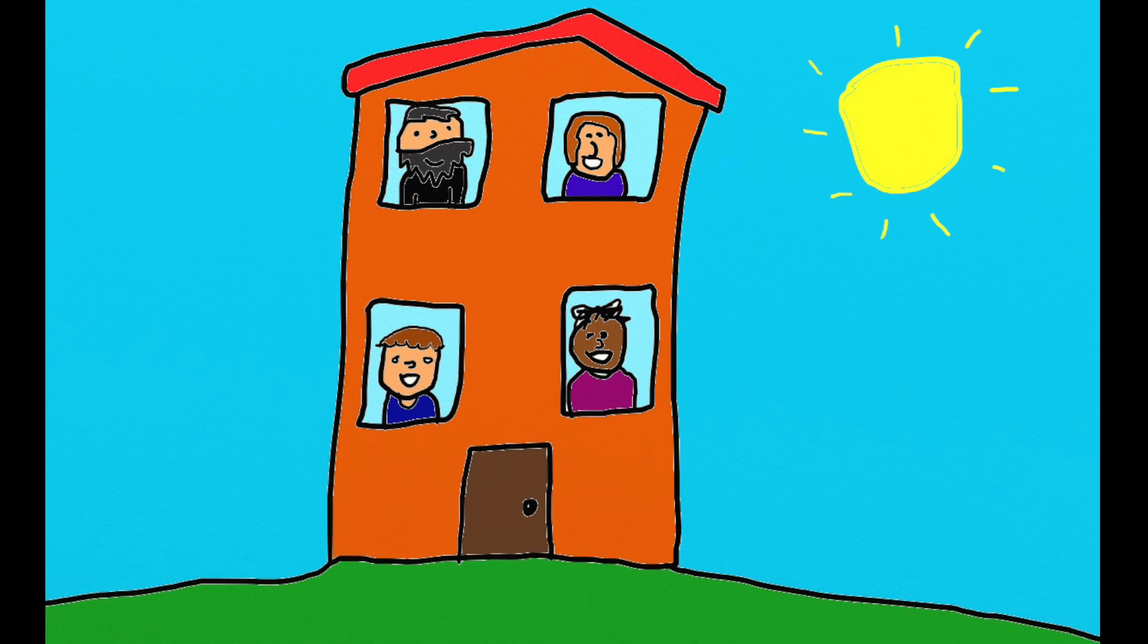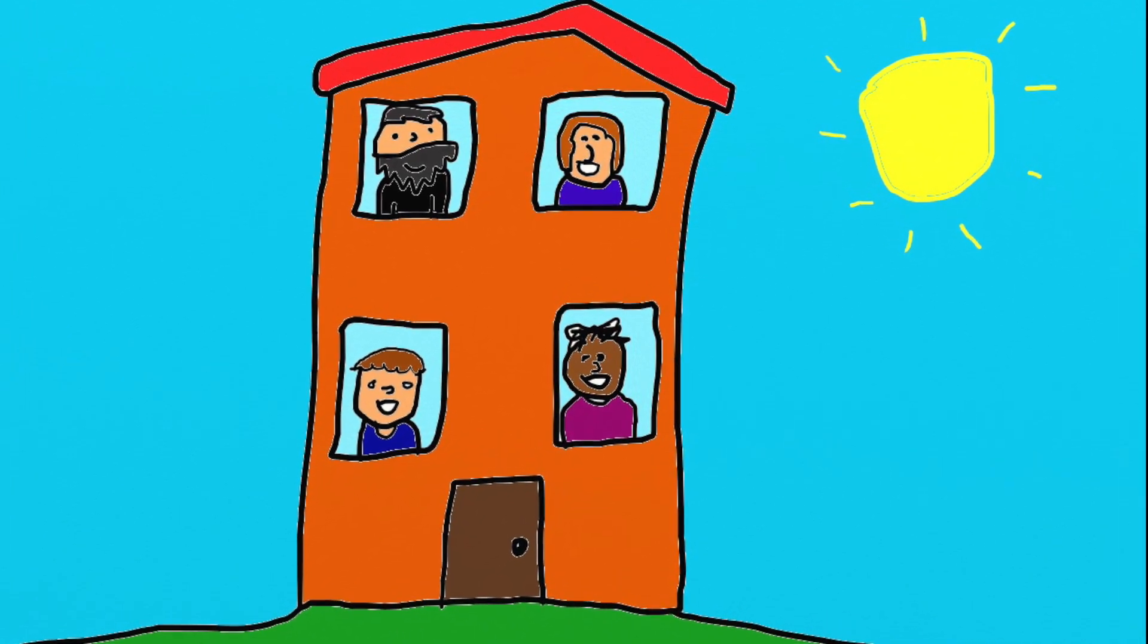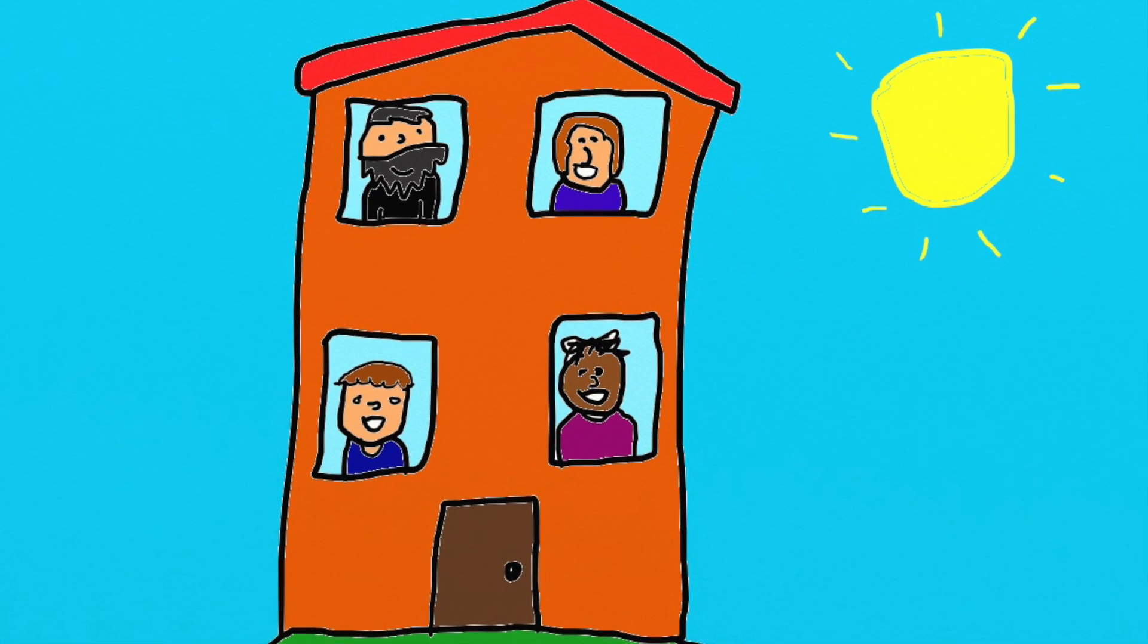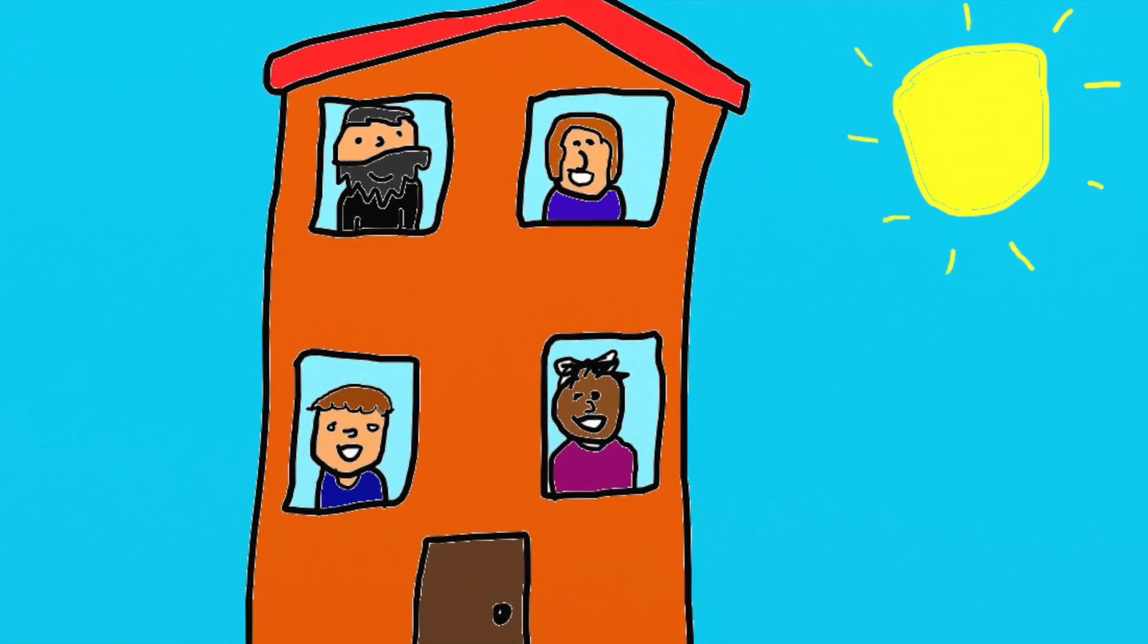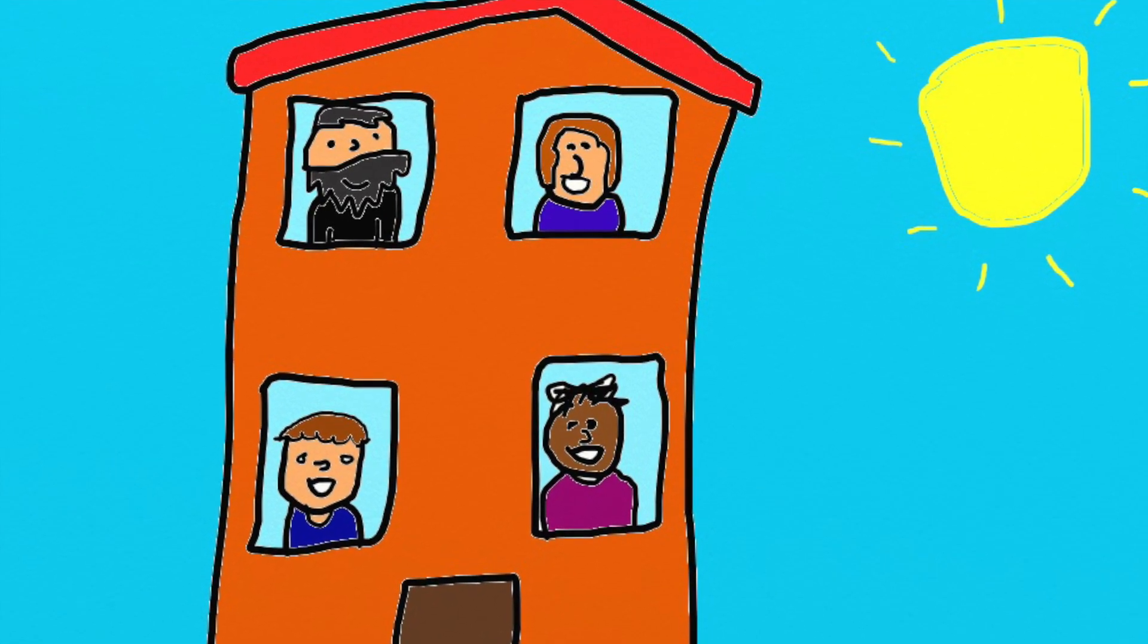Once upon a time, actually not really that long ago, there was a boy who lived with his parents and sister in a great big house with five levels. Even though it was a big house, they didn't have a lot of money, so they only lived on the second floor.